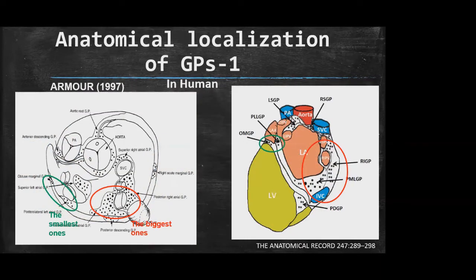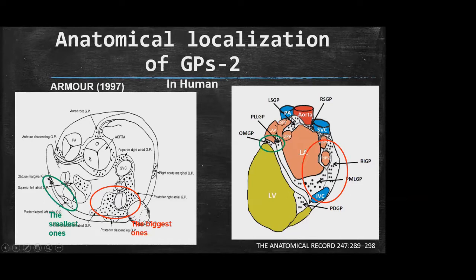In human data, Armour et al. demonstrated the distribution of ganglionated plexus sites in human autopsy specimens and defined seven GP areas. They calculated the number of neuronal bodies within each GP site, demonstrating that the great majority are located between left atrial and right atrial structures. They also demonstrated that the smallest GPs are the Marshall tract GP and the left inferior GP according to this anatomical data.